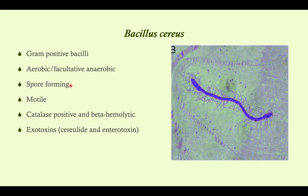B. cereus is spore-forming, which is important for its ability to be implicated in food poisoning. It is motile — it has flagella. It is catalase positive and beta-hemolytic. And it has two important exotoxins: cerealide and enterotoxin. Both are different but both cause food poisoning.